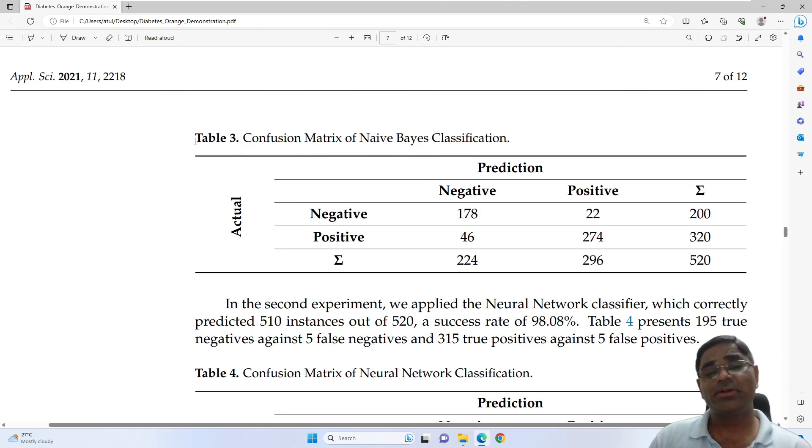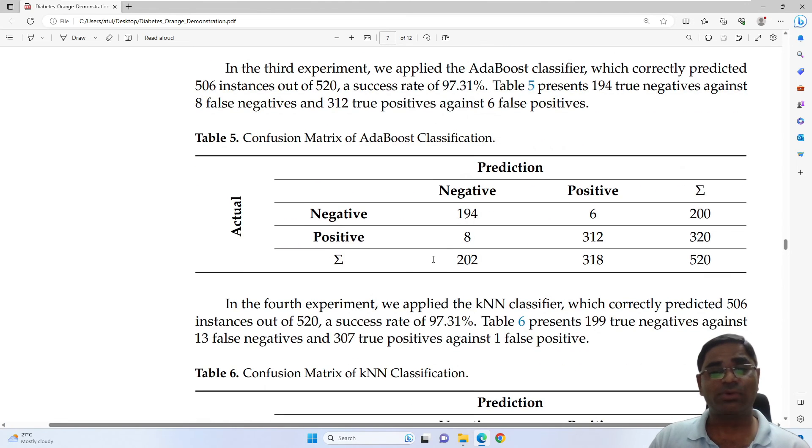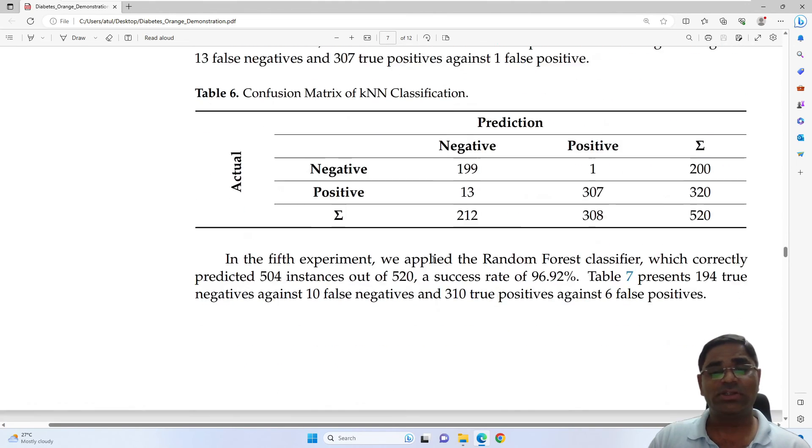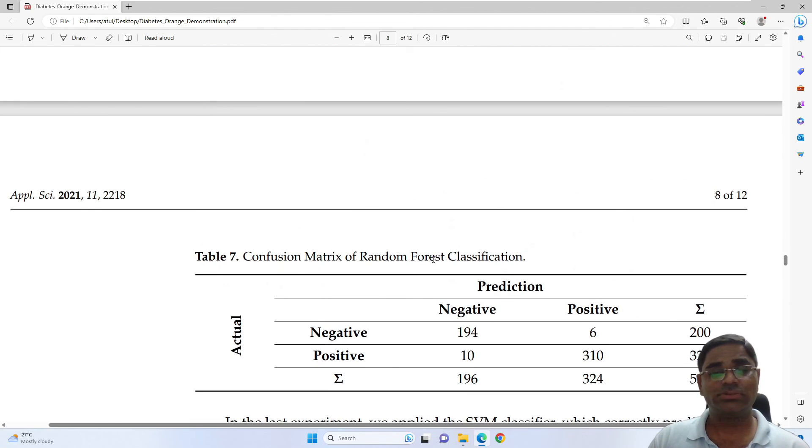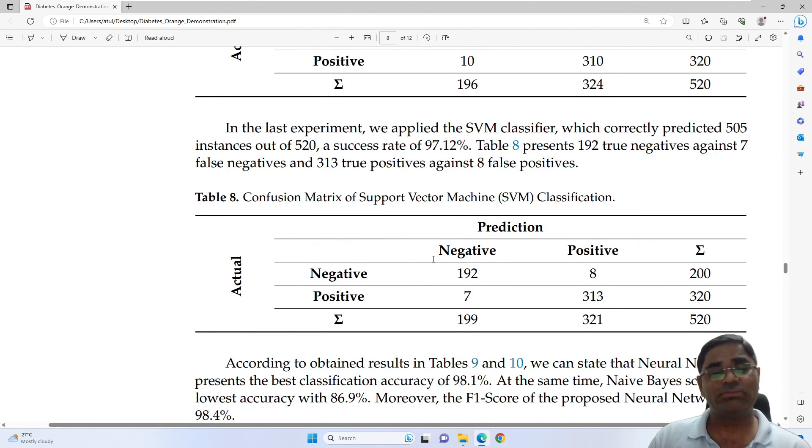Next we see the confusion matrix for different types of machine learning algorithms. For example, here it is confusion matrix for Naive Bayes classification, the next is confusion matrix for neural network classification, after that for Adaboost classification, KNN classification, Random Forest classification, and SVM classification.